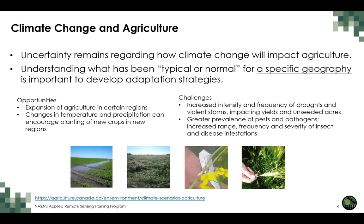Before we begin the technical part of the webinar, I want to set the context of why this work is so important. There is uncertainty about exactly how climate change will impact the agriculture sector — there will be some opportunities and some challenges. In terms of opportunities, we expect that agriculture will expand in some regions, and due to changes in temperature and precipitation, new crops may be planted in new regions. As a northern country, Canada is already seeing some of these changes in where agricultural production is occurring.